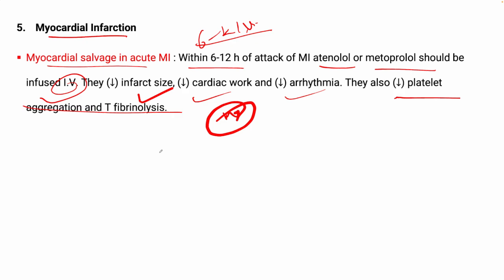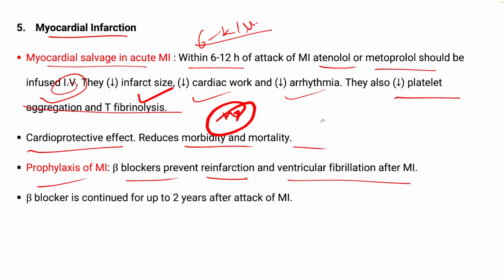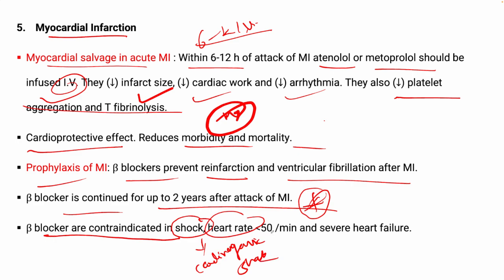Beta blockers decrease fibrinolysis because they reduce degradation of the fibrin network — part of the blood clot. This has a cardioprotective effect and reduces morbidity and mortality. Beta blockers prevent re-infarction and ventricular fibrillation after MI, and are continued up to 2 years after the attack. Beta blockers are contraindicated in cardiogenic shock, hypovolemic shock, heart rate below 50 per minute, and severe heart failure, due to their beta-1 blockade property.